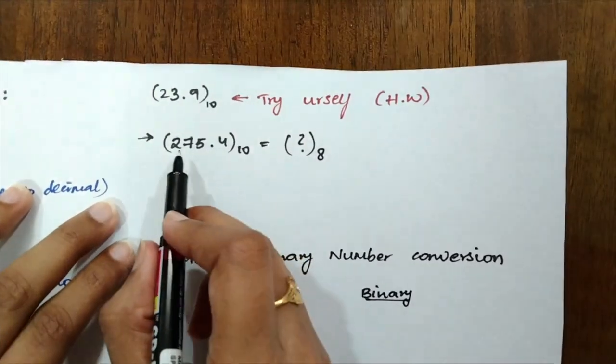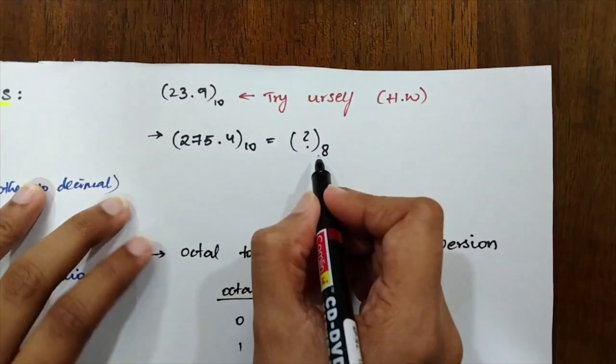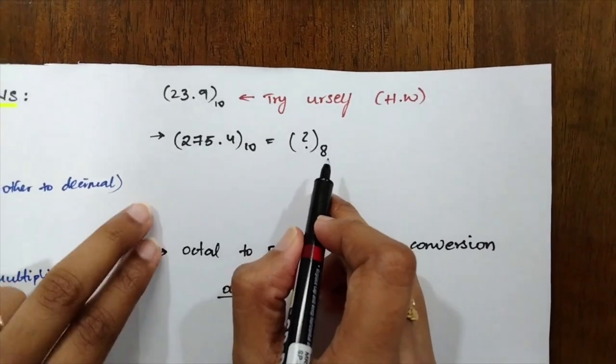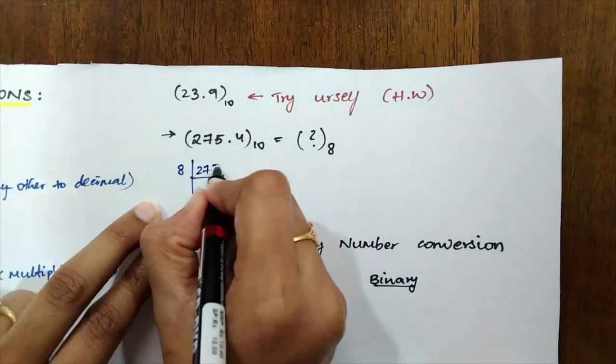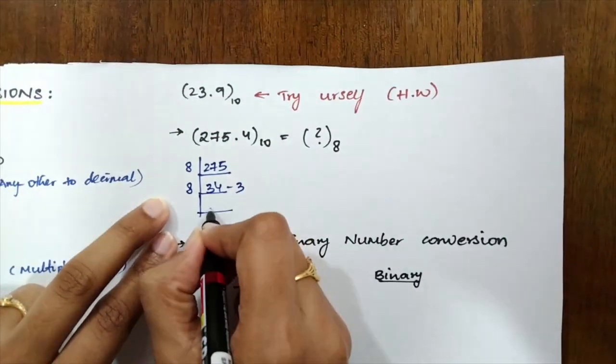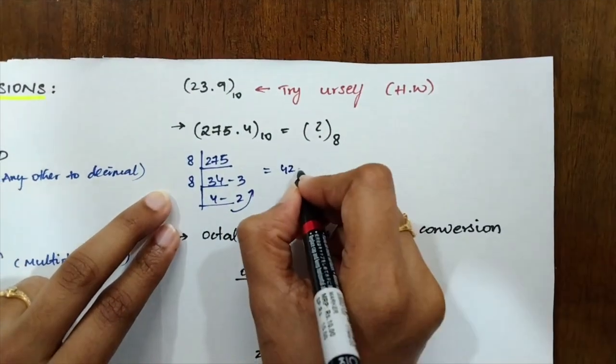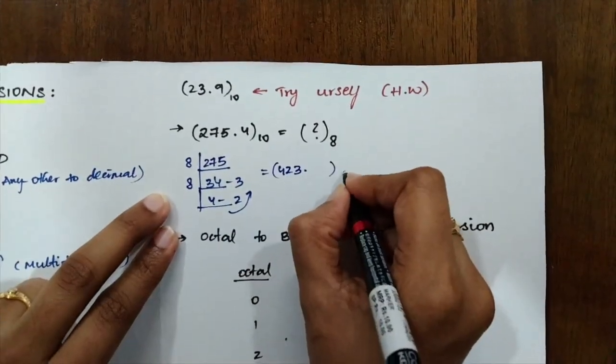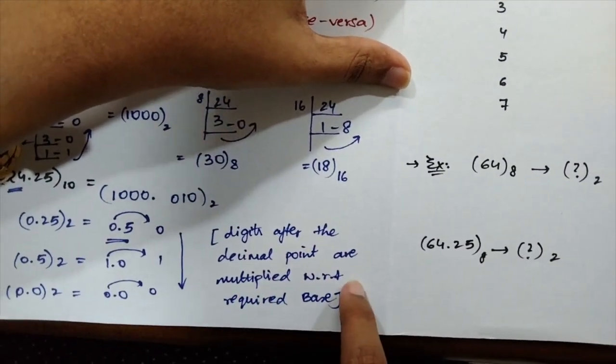Now, let's try solving this problem. 275.4 in decimal to be converted into octal. Now we can say decimal to any other. We will be doing division. I hope it's clear and easy to understand that. So just start dividing 275 - only the integer part, not the decimal point. So 275 when divided by 8, we will be getting 34 and a remainder of 3. And again, 34 divided by 8, you will be getting 4 and 2. Start going upwards. You will be getting 423 point something. We need to find the something now. As I have already mentioned, digits after the decimal point are multiplied with respect to the required base.